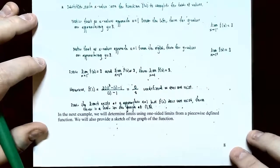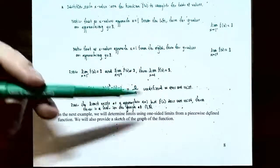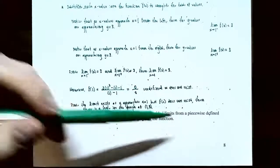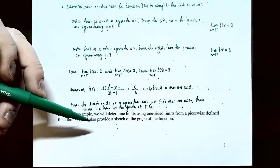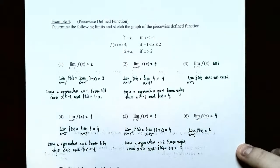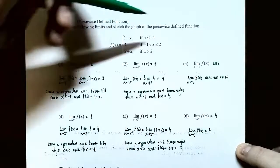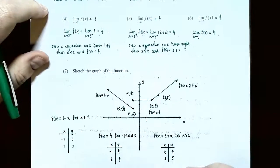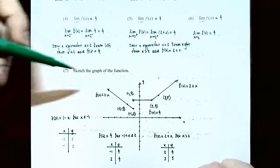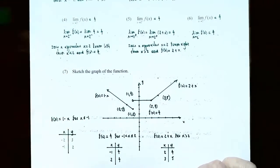In the next example, we're going to determine limits using one-sided limits for a piecewise defined function, and then provide a sketch of the graph. Example four: piecewise defined function. Determine the following limits and sketch the graph of the piecewise function. Sketching the graph is the college algebra part; finding the limits is the calculus part. If you graph the piecewise defined function, it will look like this — and it's much easier to find one-sided and two-sided limits when we have the graph.